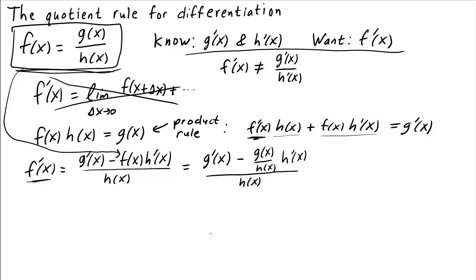To make it a little prettier, we can multiply the numerator and denominator by h of x to cancel the fraction in the numerator. When we do this, we get the final formula: f prime of x is equal to h of x times g prime of x minus g of x times h prime of x all over h of x squared.